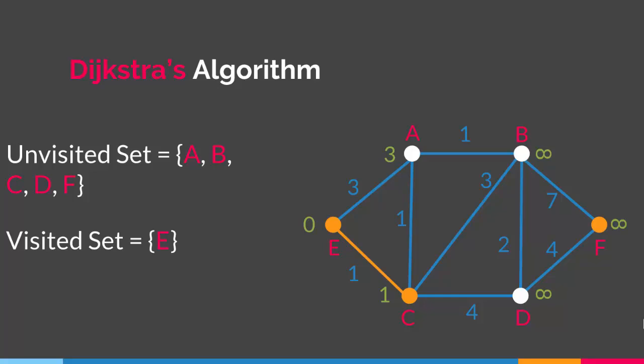When the value of a vertex is greater than the edge weight connecting it to the initial vertex, we change that vertex's value to the edge weight. So A gets value 3 and C gets value 1. After updating the vertices connected to E, we mark E as visited, moving it from the unvisited set to the visited set, and then go to the vertex with the smallest value — in this case C — and repeat the same steps. The vertices connected to C are A, B, and D.